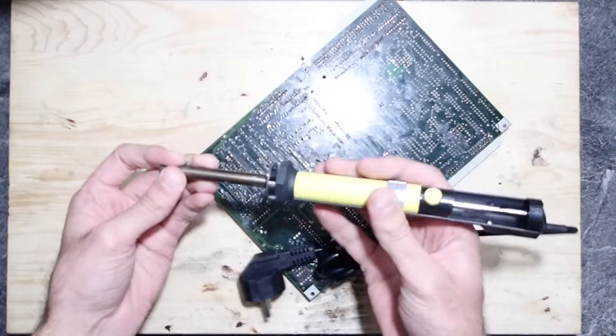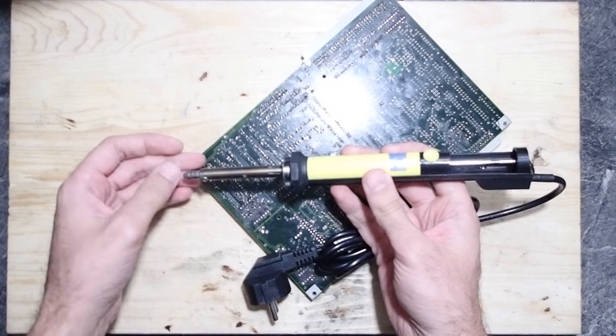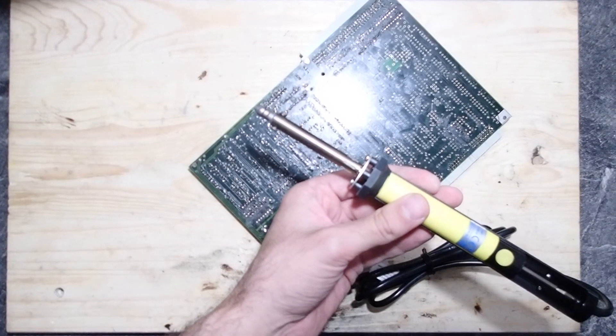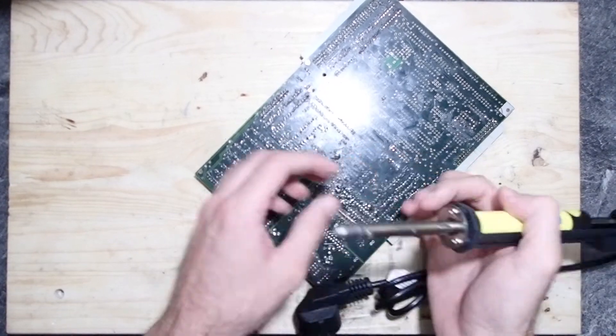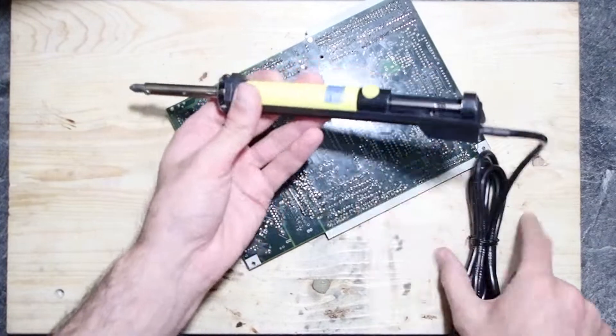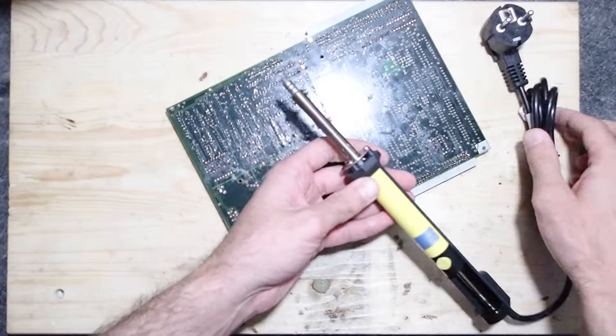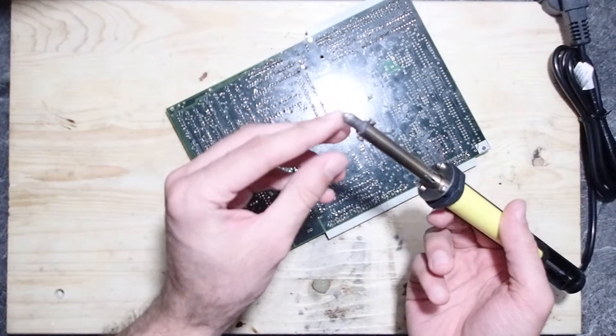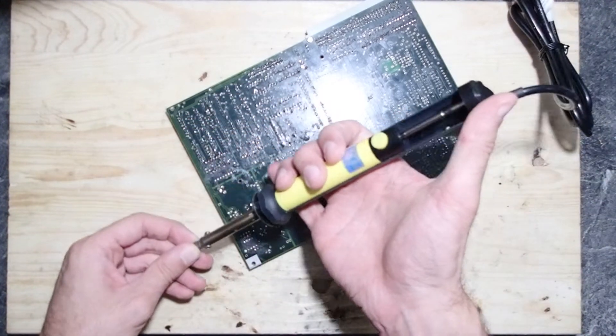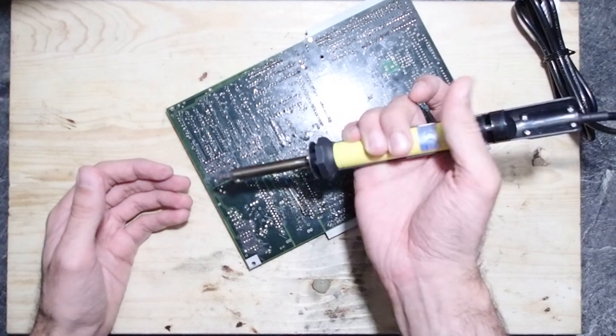So the third option is also quite cheap and it's an integrated solution. It's a manual pump like the one before directly integrated into a soldering iron, and there is a nozzle with a hole in it and as you can see it's just heated up and then the rest is the same.